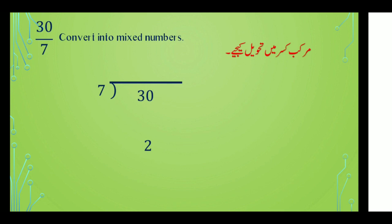7 سے 30 کو divide کریں گے — seven fours are 28، اور 30 میں سے 28 minus کریں گے تو remainder 2 رہے گا۔